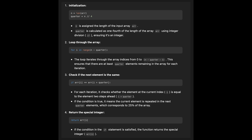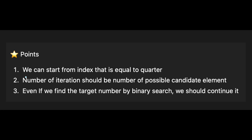The second solution uses binary search to find the leftmost and rightmost occurrence of the current number. Since the title says sorted array, we can easily apply binary search. There are three key points to this approach.